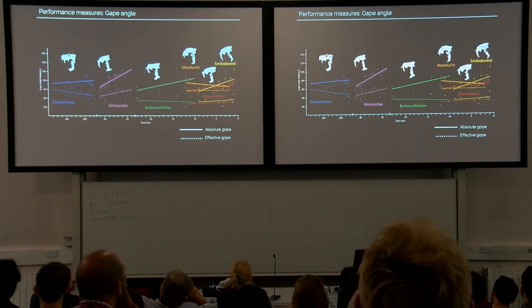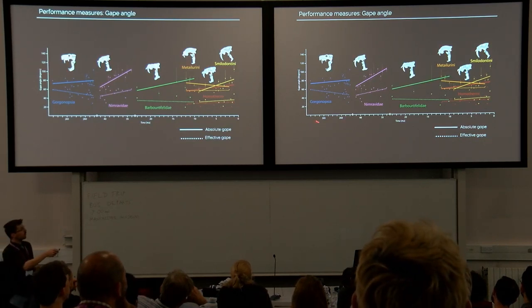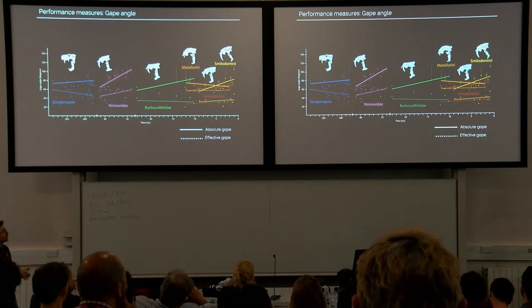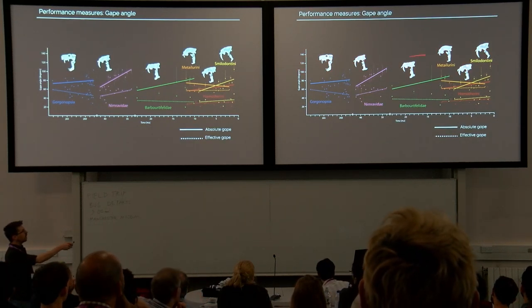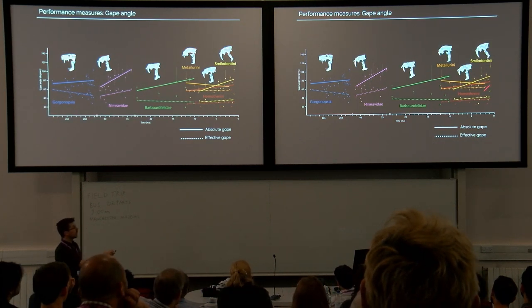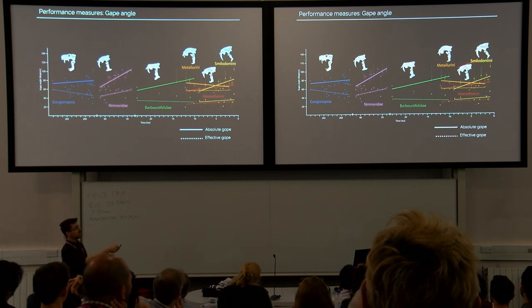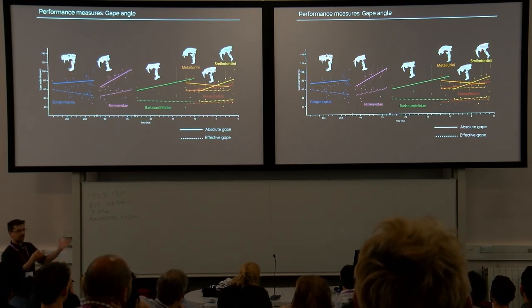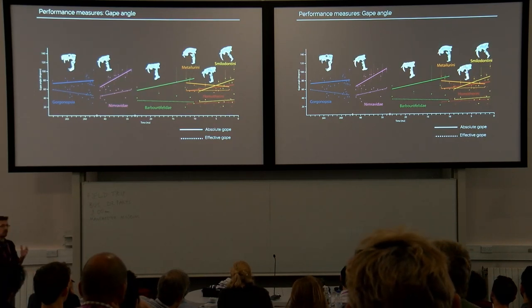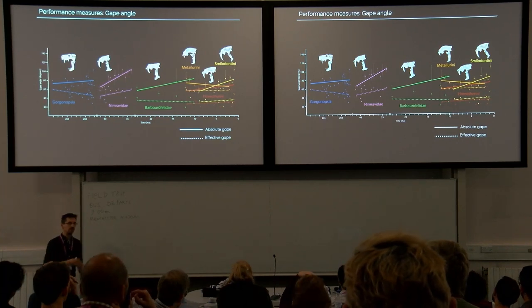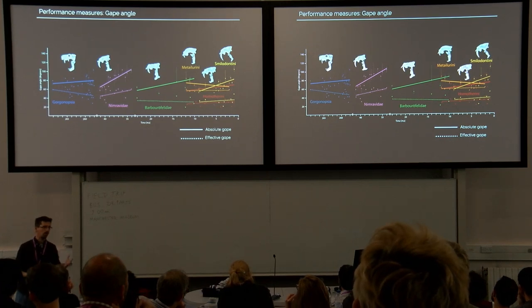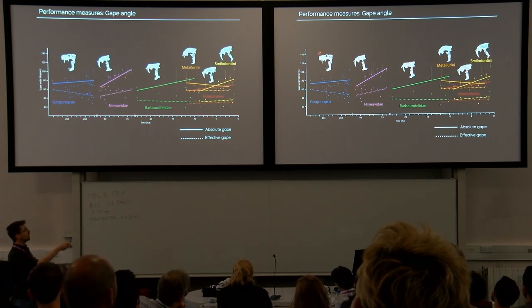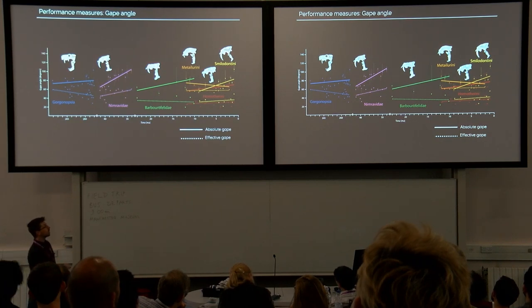Results look like this: gape angle on the y-axis, time and the different taxa along the x-axis. Gape angle generally increases, although with different slopes across taxa, very clearly in the earlier groups. But as soon as we get to the saber-toothed cats and their spatial and temporal overlap, we see those three groups are doing something completely different. The solid lines represent the absolute gape angle; the dotted lines represent the effective gape angle — the clearance between the canines. In the Gorgonopsians, the teeth actually outgrow the gape opening, resulting in a decrease in effective jaw gape.